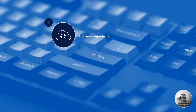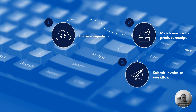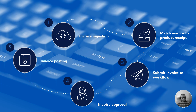The AP automation process starts when an invoice is ingested through the AP automation API. If an invoice relates to a purchase order, it can automatically be matched to the purchase order and product receipt as the first step. If the invoice matches the product receipt and the purchase order, it is automatically submitted to the approval workflow. The invoice approval workflow is configurable and can go through one or more review and approval steps. Once the invoice has been approved, it is automatically posted by the workflow.